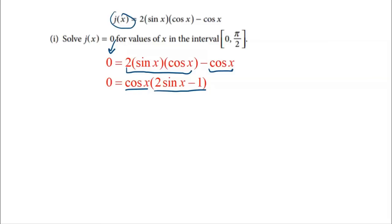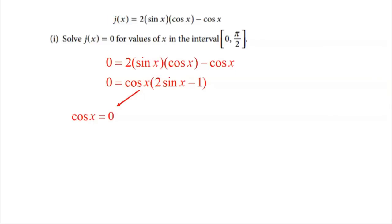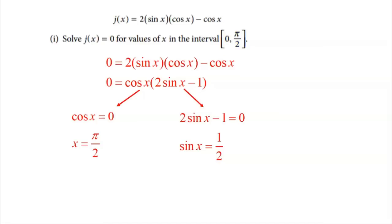Using the zero product property — when two things multiplied equal zero, one must be zero — the first case is cosine of X equals zero, giving X equals pi over two. The second case, two sine of X minus one equals zero, gives sine of X equals one half, which yields X equals pi over six. Both pi over two and pi over six are the only answers on the restricted interval of zero to pi over two, though there are infinitely many solutions overall.